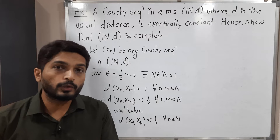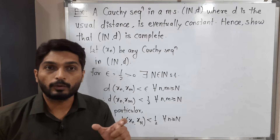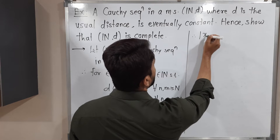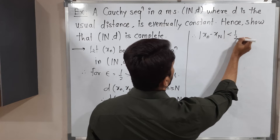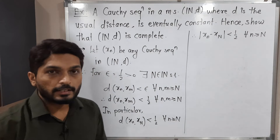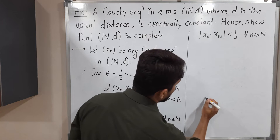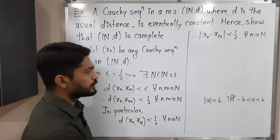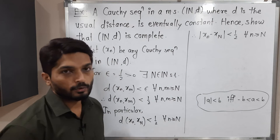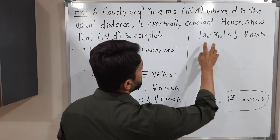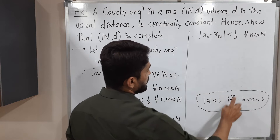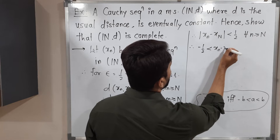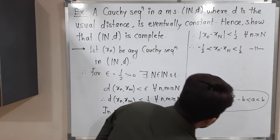Now see what is D — as I told you earlier, D is the usual distance: D of x, y equals mod x minus y. So using the actual definition of D, I can write: mod of Xn minus X capital N less than half, for all n greater than or equal to capital N. There is one popular result — a property of modulus: mod A less than B if and only if minus B less than A less than B. This is a most famous result and we use it frequently. So using this result, our A is Xn minus X capital N and B is half. So I can write: minus half less than Xn minus X capital N less than half.